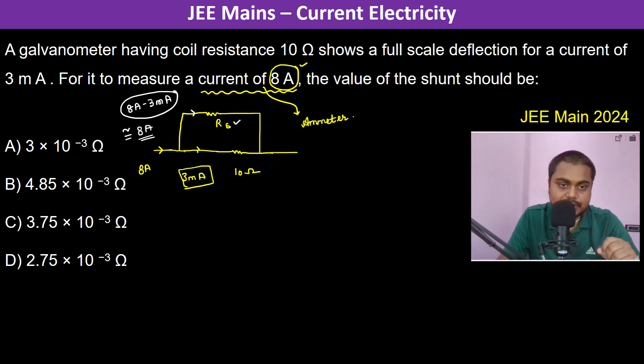If you see the shunt resistance and this galvanometer resistance, both are in parallel, so therefore their potential difference must be the same. So therefore I can write 8 ampere into Rs should be equal to 3 milliampere into 10 ohms.